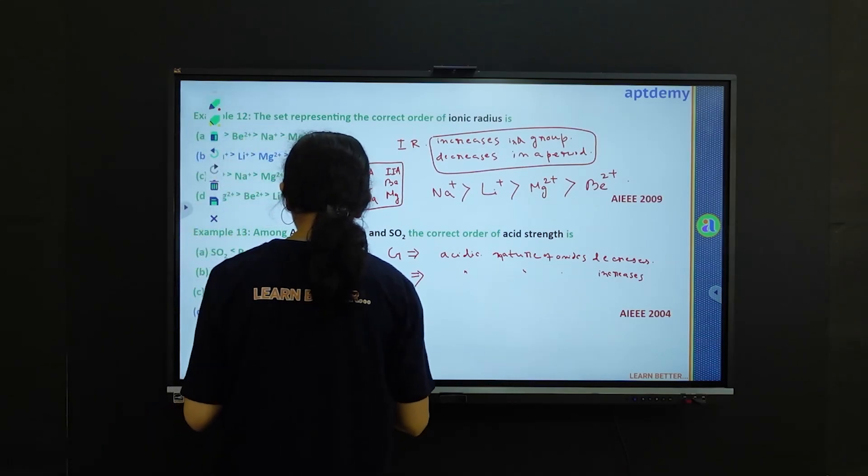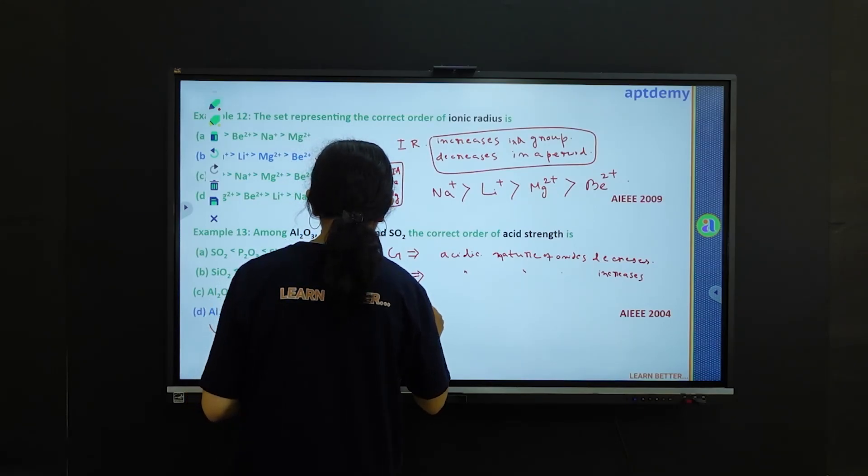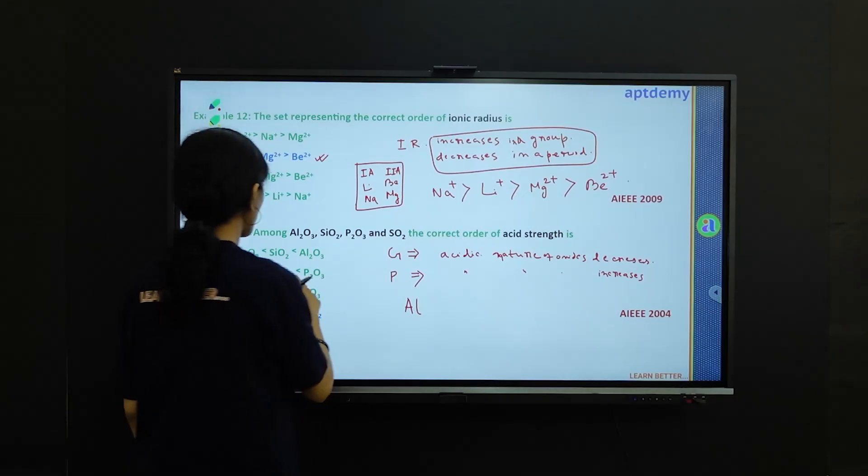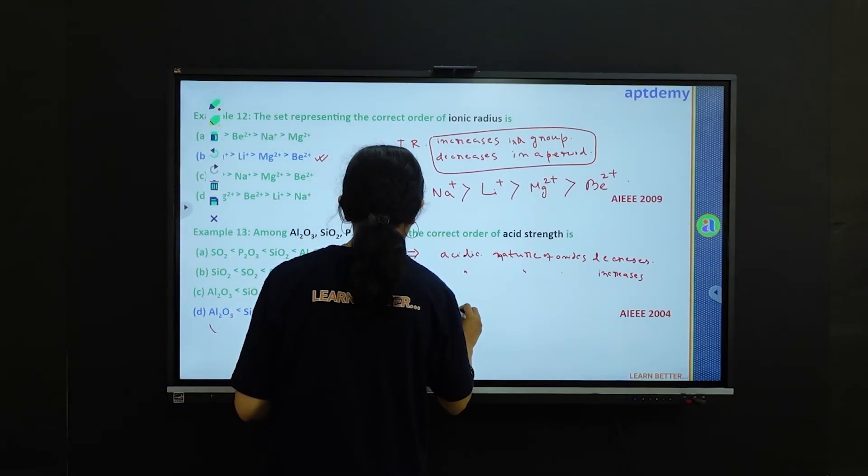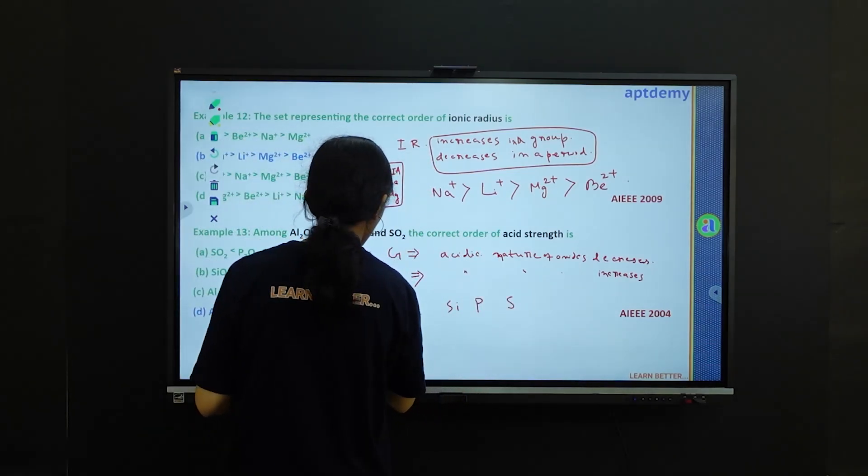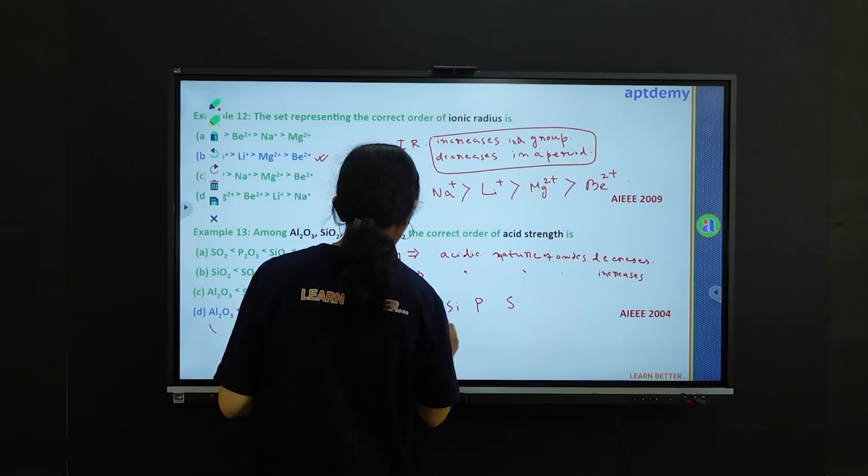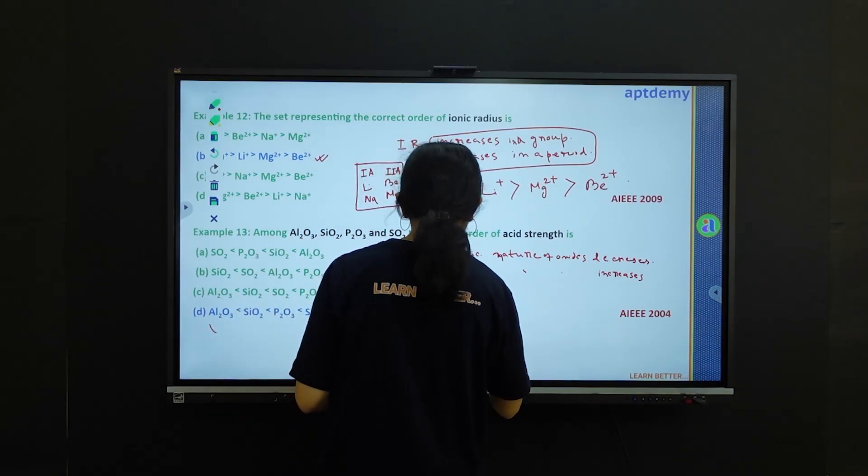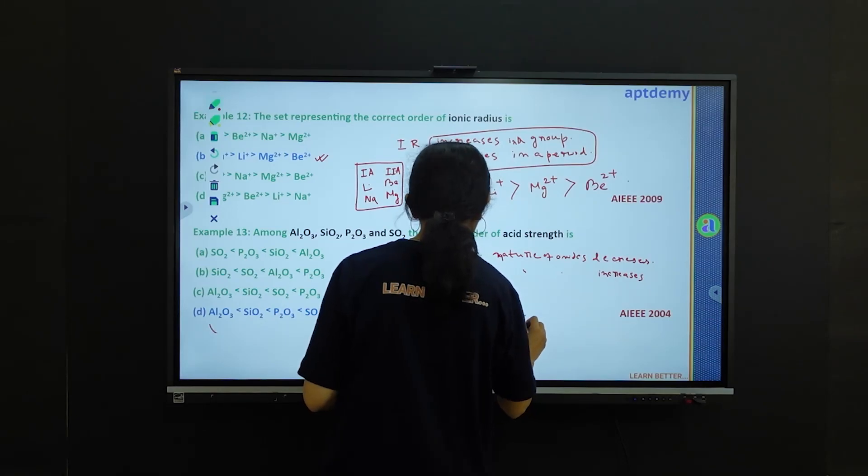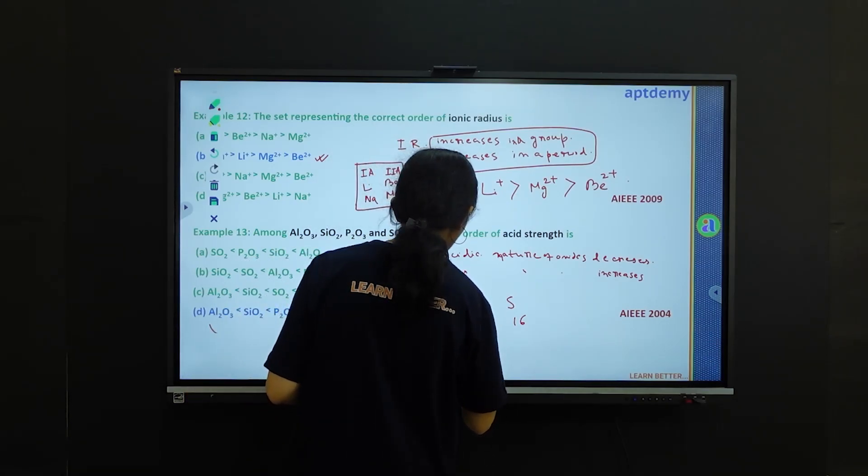Now, if you arrange the given elements, we are considering the oxide. So elements are aluminium, silicon, phosphorus and sulfur. If you consider their atomic numbers: 13 for aluminium, 14 for silicon, 15 for phosphorus and 16 for sulfur. And the given oxides are Al2O3, SiO2, P2O3 and SO2.